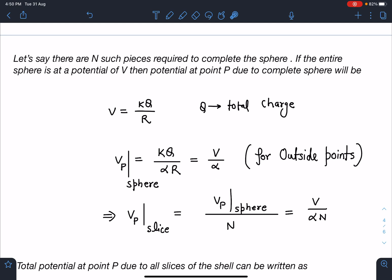Now for outside points, since all the N pieces are identically placed, I can say due to one slice this potential should be Vp sphere by N. If you are taking N pieces, then for each slice potential is V by αN.